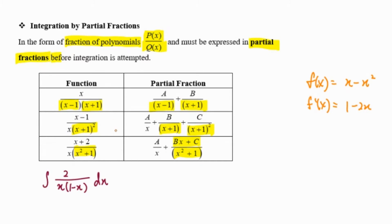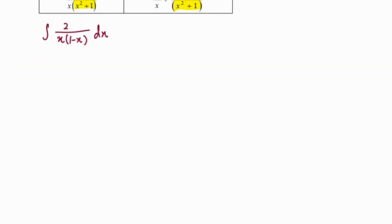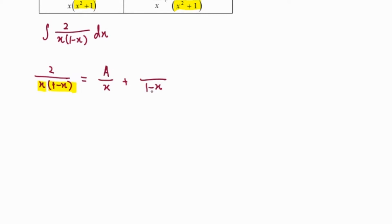That's why we need the technique of integration by partial fractions — to express our fraction as simple fractions so we can proceed with integration. The first step is to express the fraction in partial fraction form. This denominator has two different factors: x and (1-x). For those linear factors, the numerator becomes a constant. So 2 equals A times (1-x) plus B times x.